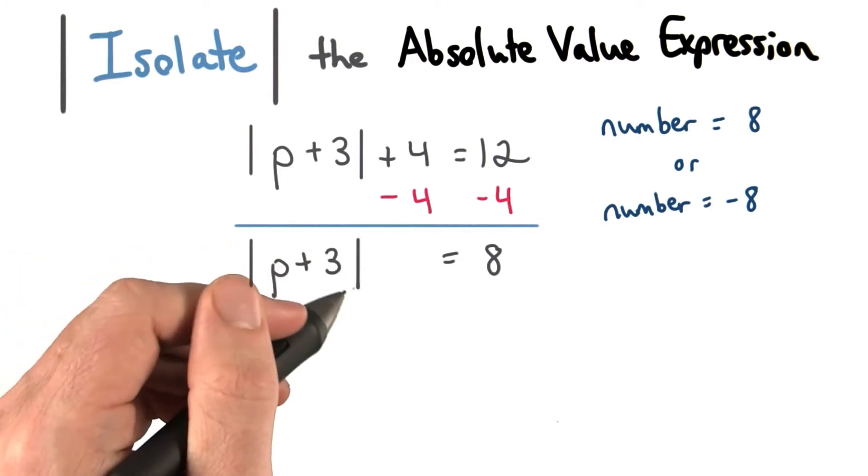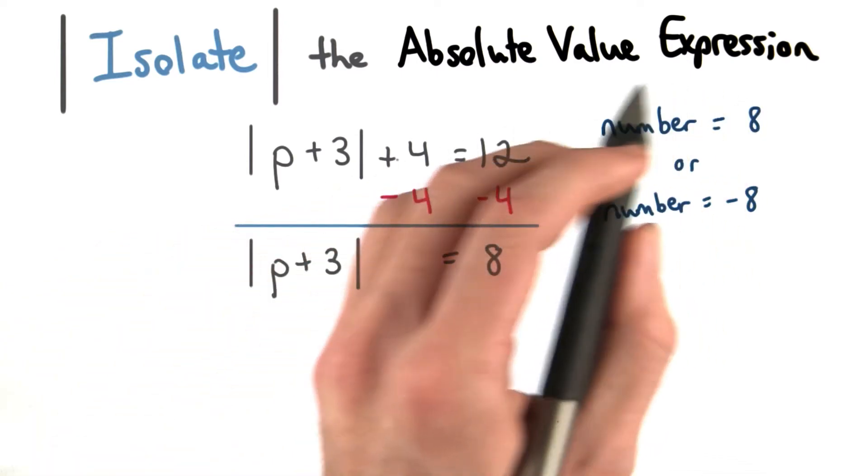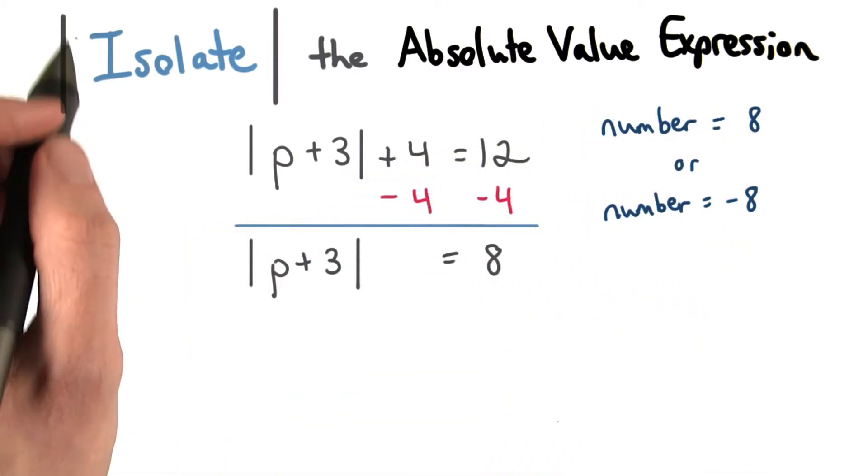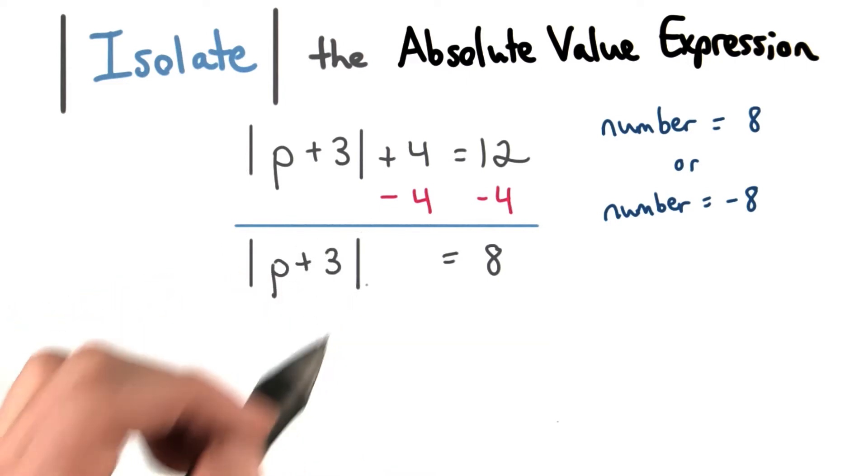The absolute value, or the distance of p plus 3 from 0 must be 8. When solving absolute value equations, we need to make sure we get the absolute value symbol on one side of the equation alone. That way we can represent the distance.